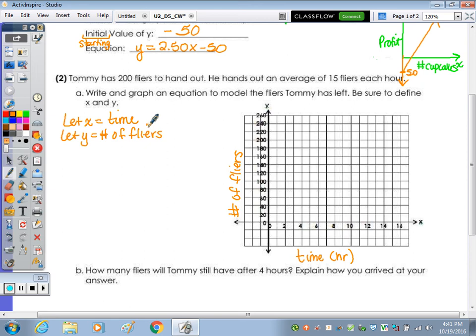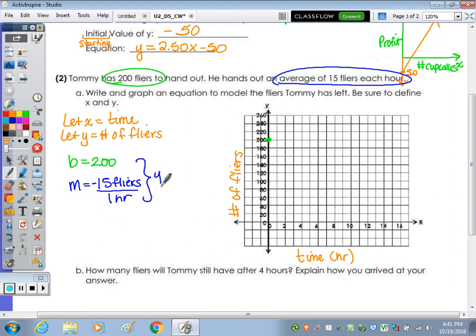I'm told that I'm starting with 200 flyers, so b is 200. That's my y-intercept. And I'm handing them out at an average of 15 flyers per one hour, so that's our slope. The number of flyers is decreasing, so I want to make sure I'm minus 15 flyers per one hour. The equation would be y equals negative 15x plus 200.